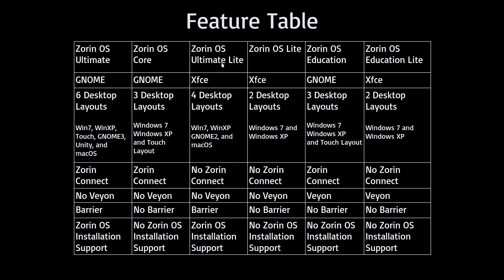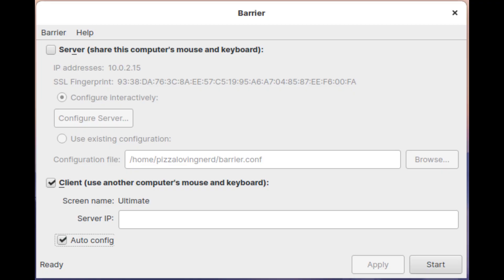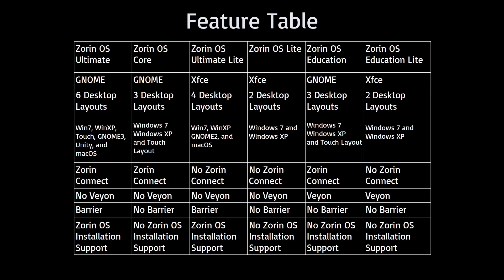Zorin OS Ultimate and Ultimate Lite also come with a feature called Barrier, which allows you to use one keyboard and mouse on two systems — basically treating two systems as having two monitors. So you could have, say, a Mac and a Zorin OS computer and control them with one keyboard using Barrier. Zorin OS Ultimate also has installation support, so if you've never installed an operating system before, the Zorin OS team will help you get set up or resolve hardware issues. Note that the Lite versions don't come with Zorin OS Connect. Zorin OS Ultimate and Ultimate Lite both cost $40, but if you pay for one, you get both.